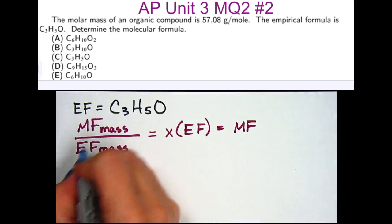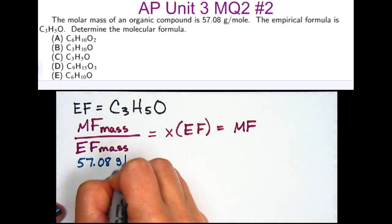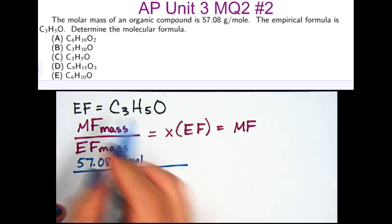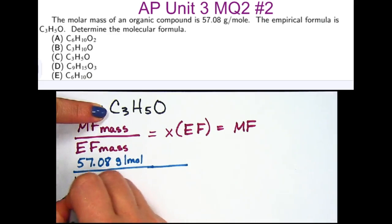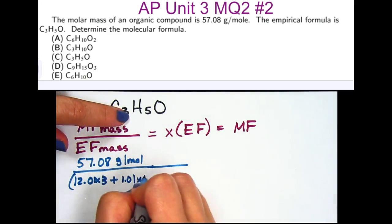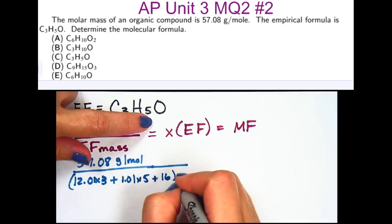So we are told that the molecular formula mass is 57.08 grams per mole. We're going to divide that by the empirical formula's mass, which would be 12.01 times 3 for the carbon, plus 1.01 times 5 for the hydrogen, plus 16 for the oxygen.